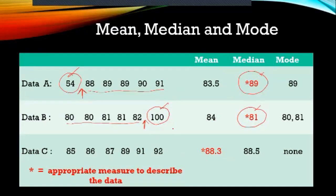In data set C, there's no extremely low or extremely high value — the values are all close together. Computing the mean and locating it in the data, it falls in the middle. So it's appropriate to say the scores are close to 88.